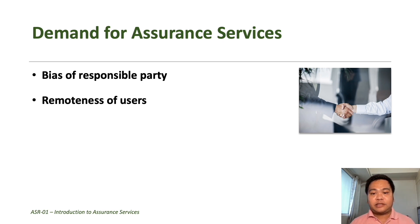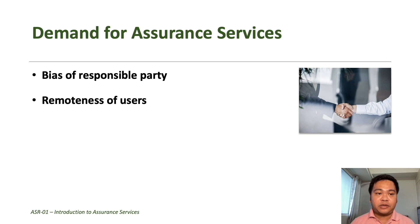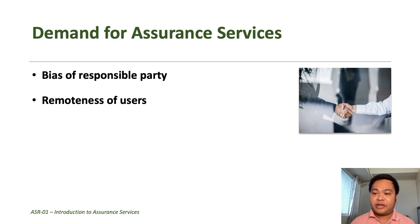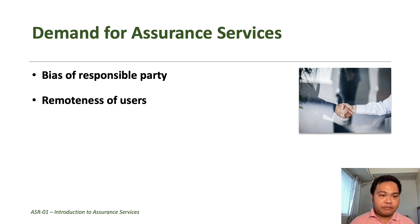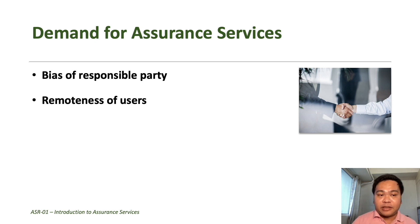Another reason is the remoteness of the users from information providers. Most often the users are separated from the preparers of the information. For example, in the case of financial statements, users outside of the entity's organization — like banks, creditors, or small shareholders — cannot directly access the entity's information. Their primary information will come from reports published or provided by the entity. Before that information can be used, they will demand that the report has been subjected to validation or examination by an independent third party.